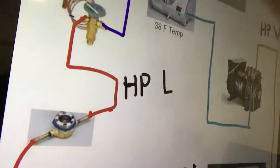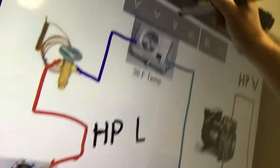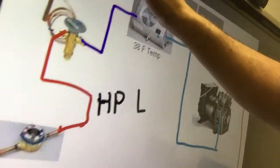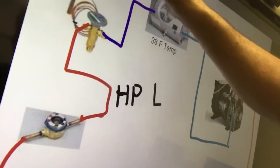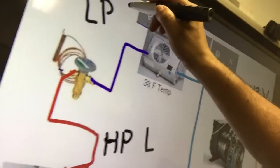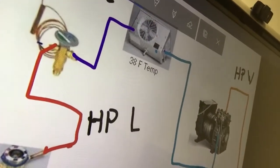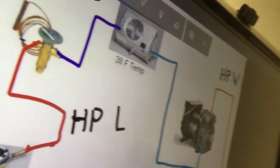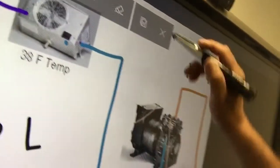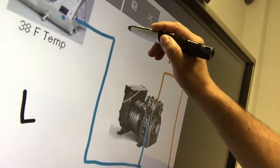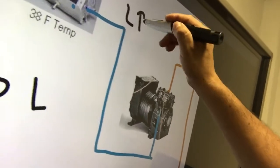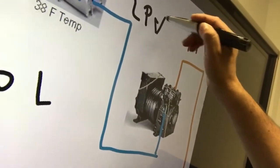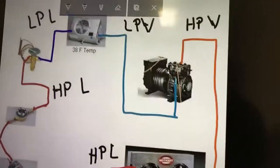On this next section, it becomes LP — low pressure liquid going into the evaporator. And then after the evaporator, this section is LP — low pressure vapor — going back to the compressor.